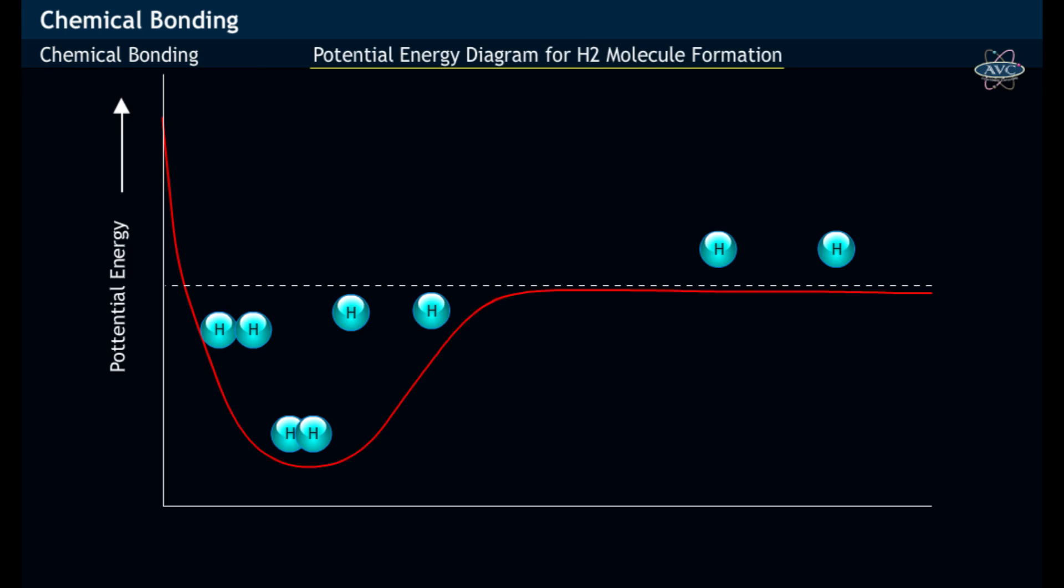In the potential energy diagram for hydrogen molecule formation, it may be noticed that the unbonded hydrogen atoms have got high potential energy, that is lower stability.